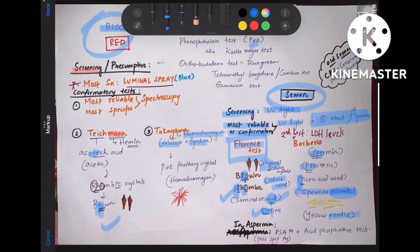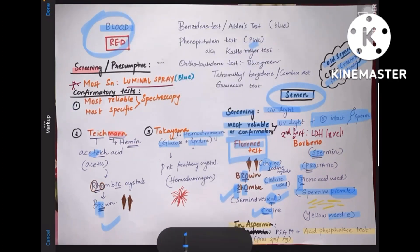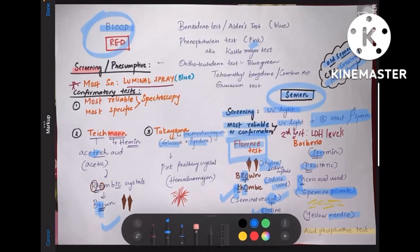In aspermia, when there are no sperms in semen, you use prostate specific antigen (PSA) plus acid phosphatase test to confirm whether it is a seminal stain. For old semen, you use the creatine phosphate kinase test. This concludes the topic. It's a simple one — you just need to memorize these names, and I have provided mnemonics to help.